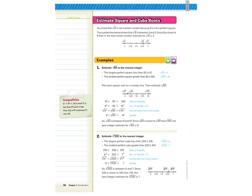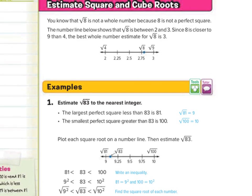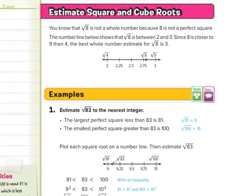Estimate square and cube roots. You know the square root of 8 is not a whole number because 8 is not a perfect square. The number line below shows that the square root of 8 is between 2 and 3. When you think about it, 2 squared is 4, so the square root of 4 is 2. 3 squared is 9, and the square root of 9 is 3. So the square root of 8 is going to fall somewhere between 2 and 3. Now, since 8 is closer to 9 than 4, the best whole number estimate for the square root of 8 is 3.